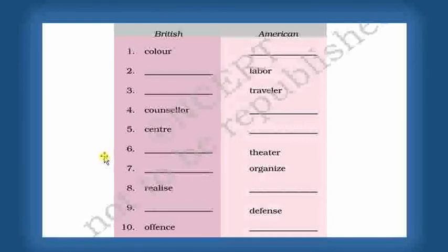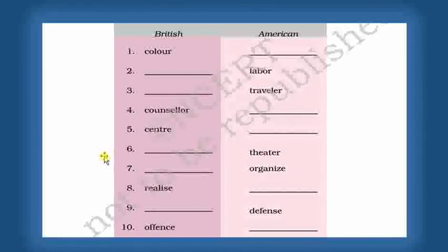Next: Defence. The American spelling is D-E-F-E-N-S-E, with S-E at the end. The British English spelling is D-E-F-E-N-C-E, with C-E. Similarly, Offence: British English is O-F-F-E-N-C-E and American English is O-F-F-E-N-S-E.